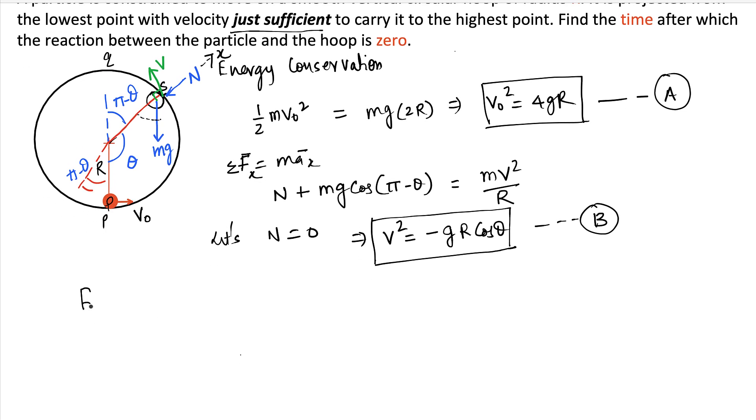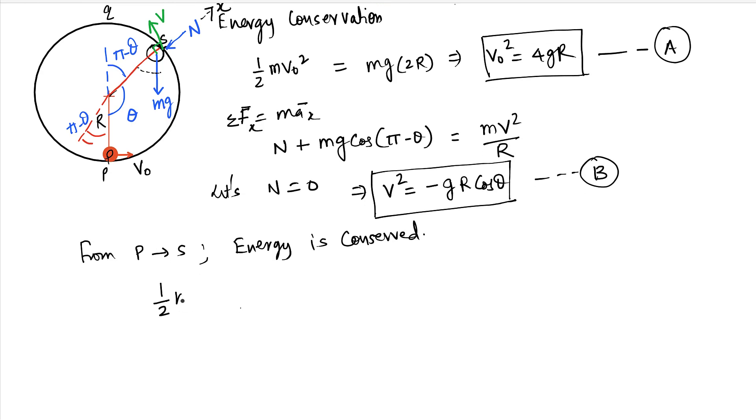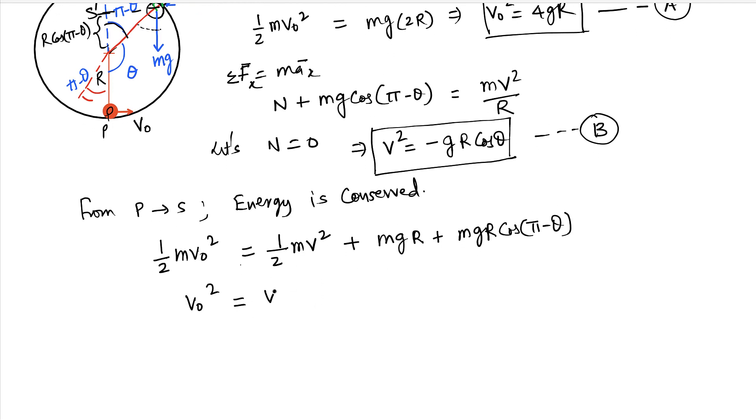Now from P to S energy is still conserved, right? So we can again write the conservation of energy equation. Initially the energy is half m V0 square. Finally at point S it has half m V square as the kinetic energy plus the potential energy, which is mgr plus mgr cos(pi minus theta). Therefore V0 square equals V square plus 2gr(1 minus cos theta). Let's call this equation C.